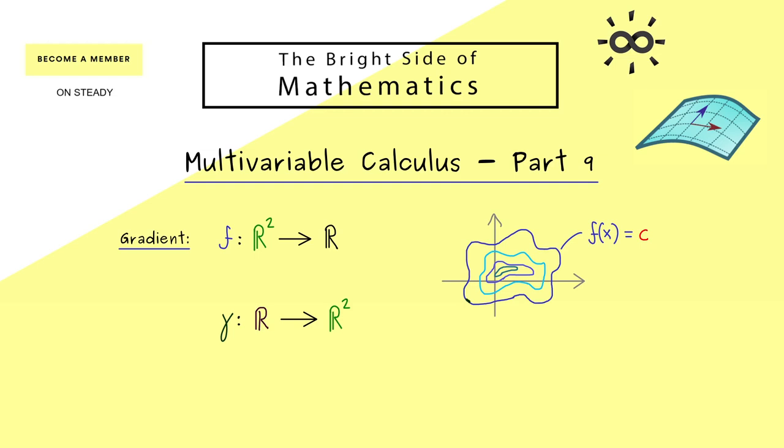In fact what we now want is that the image of gamma lies exactly on the contour line. In other words the composition of both maps is a constant function. More precisely f after gamma is always the value c. This holds no matter which point t from the domain of gamma we put in. So you see with these assumptions we have a well defined constant function.